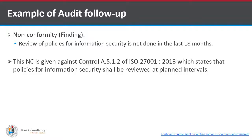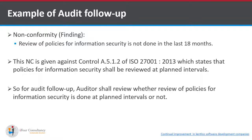This NC is raised against control A.5.1.2 of ISO 27001:2013, which states that policies for information security shall be reviewed at planned intervals. In the first audit, the auditor suggests that the organization must review their information security policy at planned intervals. In the audit follow-up, if the review is still not done at planned intervals, the auditor can give a direct non-conformity. The auditor shall verify whether the review of policies is done at planned intervals, and if not, a direct NC can be raised.